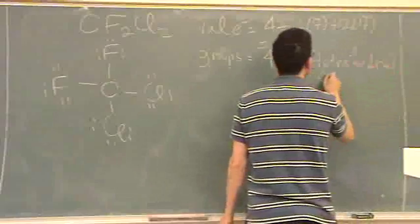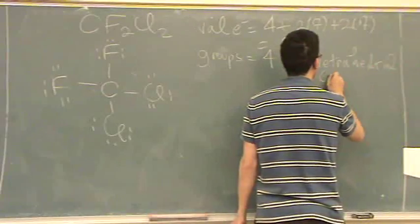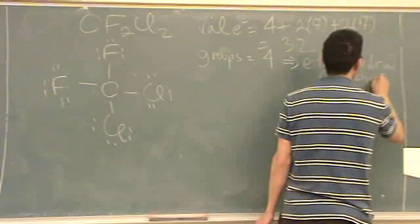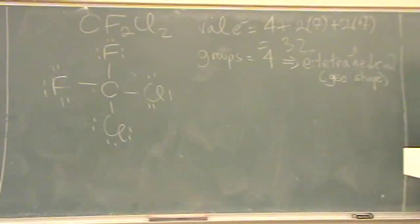And the same for the geometric. Yeah. Tetrahedral. And the geometric shape, or geometric, or molecular geometry, whatever. It's all meaning the same thing. Geometric shape is also tetrahedral because there's no lone pairs. So whenever there's no lone pairs, both names are the same.